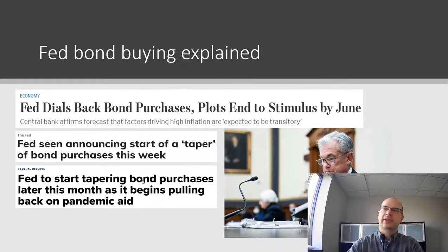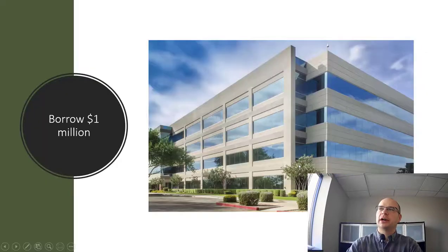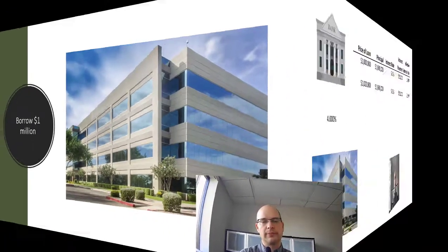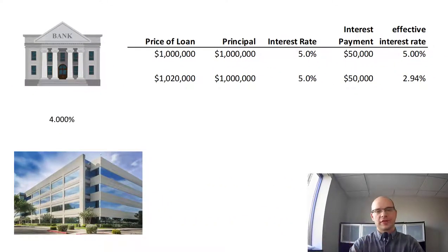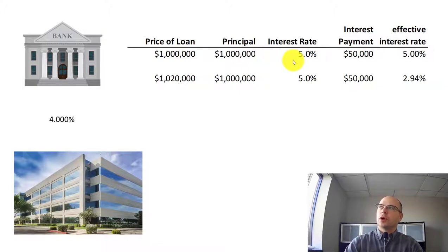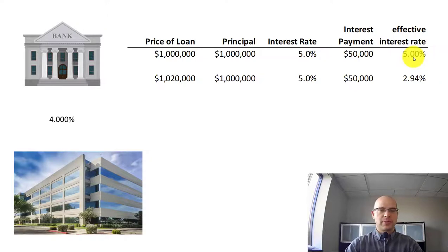Let's start with an example. Say a bank makes a loan for a million dollars to someone who wants to buy a commercial property. For the sake of simplicity, let's assume this loan has a one-year term and is ultimately sold to investors. In this top scenario, the loan is sold to an investor for a million dollars — the face value. The investor is going to get 5% of the million dollar face value, or $50,000. So ultimately, they'll end up with a 5% total return.